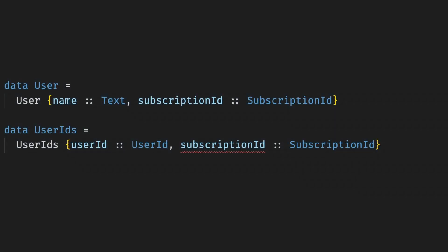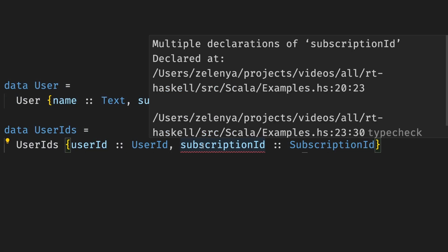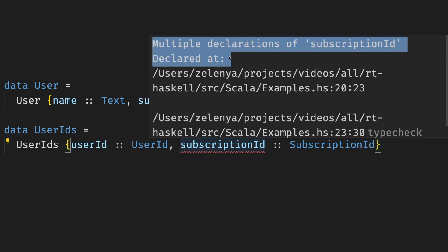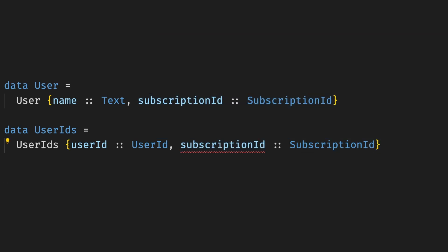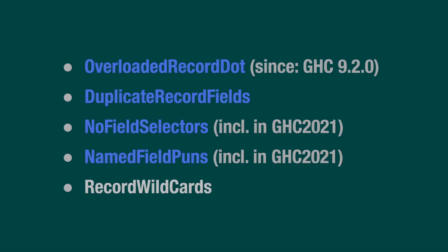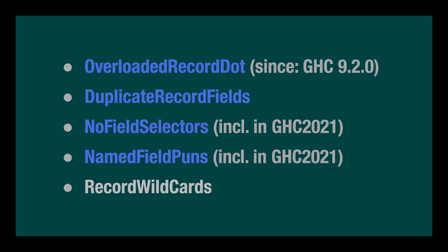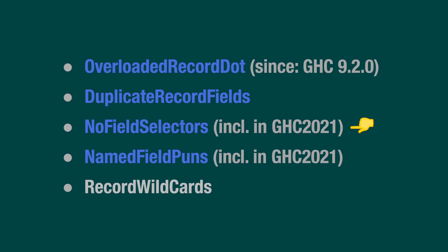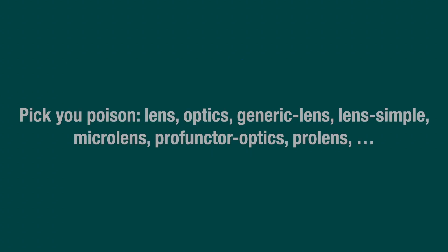Let's move on to types. There is no easy way to put this: records in Haskell can be irritating. It's annoying when you use records with the same field names — for example, if you have two subscription IDs, the compiler will tell you there are multiple declarations of subscription ID. It's also annoying when you need to access or update nested records. So what would I recommend? Don't use vanilla records. You have to get familiar with a couple of extensions: start with OverloadedRecordDot, available since GHC 9.2.0, and DuplicateRecordFields. You can also look at NoFieldSelectors, NamedFieldPuns, and maybe RecordWildCards. But don't expect a smooth ride even with all those extensions. It's also common to use lenses via some optics library. There are quite a few options: lens, optics, generic-lens, lens-simple, microlens, profunctor-optics, prolens, and others.